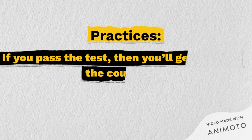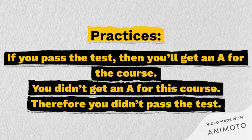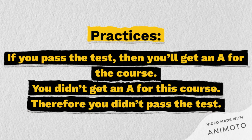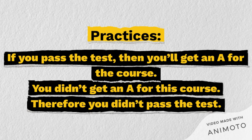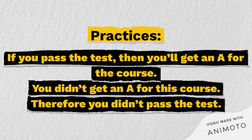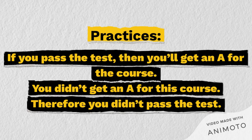Here is a practice example. If you pass the test, then you get an A for the course. You didn't get an A for this course, therefore you didn't pass the test. In this argument, we are denying the consequent. To understand this: if you pass the test, you get an A — but if you haven't got an A, then you can't have passed the test. It's very simple.